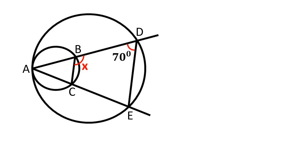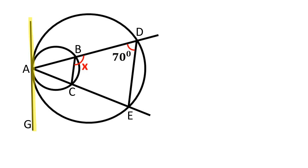Let's solve this problem. If you'd like, you can click the pause button and try to solve this problem yourself before you watch the video. We have two circles internally tangent to each other at point A. Let's draw a tangent line through point A and review the smaller circle.